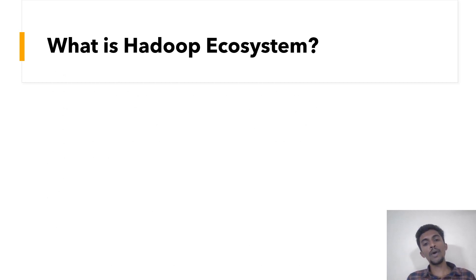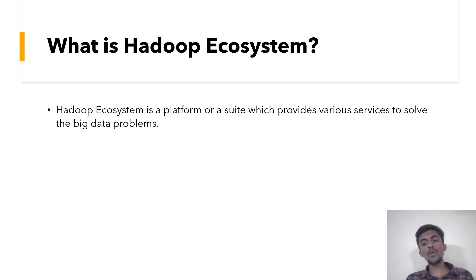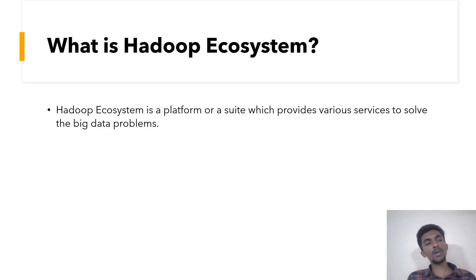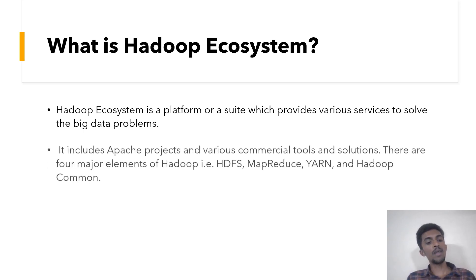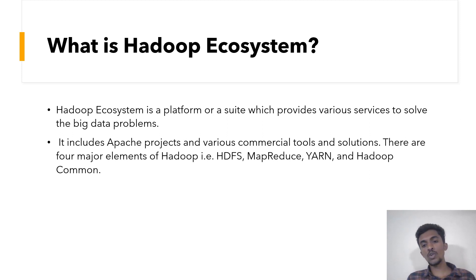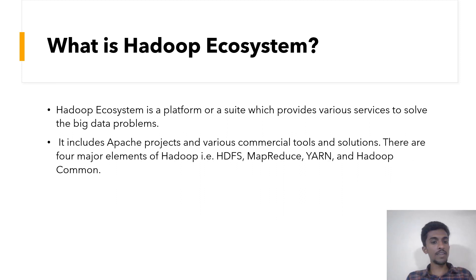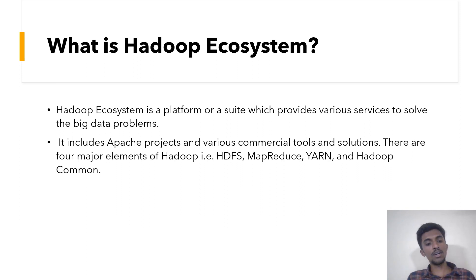The Hadoop ecosystem is a platform or suite which provides various services to solve Big Data problems. It provides a platform to solve problems related to Big Data, overcoming the DBMS limitations. It also includes Apache projects and various commercial tools and solutions. There are four major elements of Hadoop: HDFS, MapReduce, YARN, and Hadoop Common. These are the four major important elements of the Hadoop ecosystem, along with Apache projects and other commercial tools and solutions for Big Data.